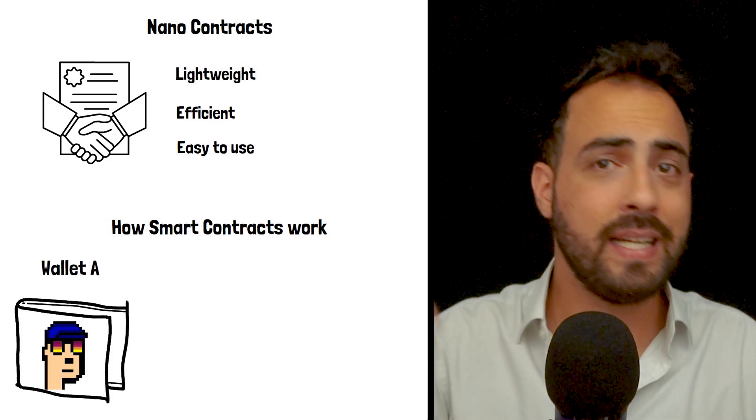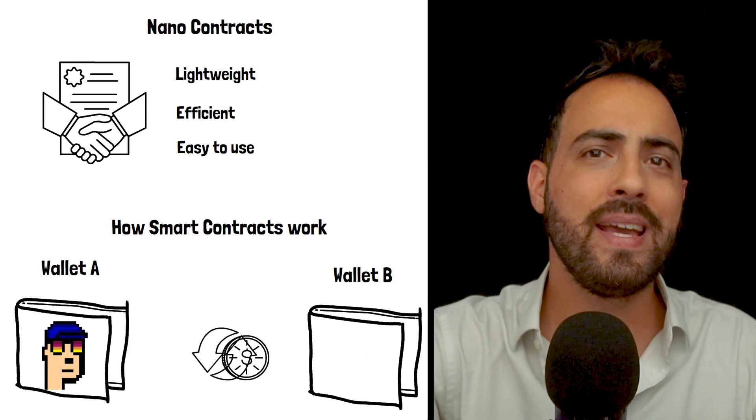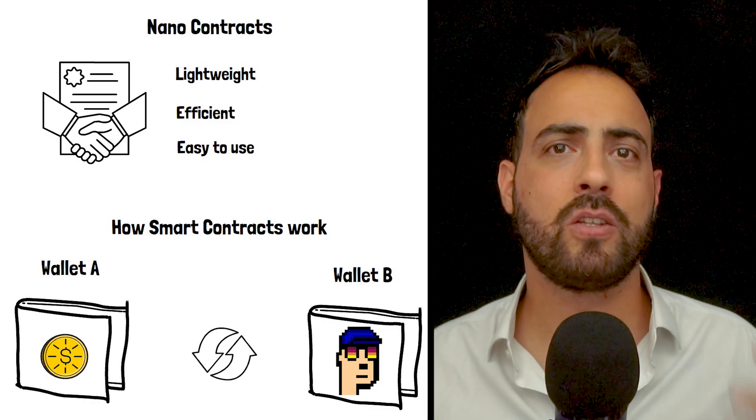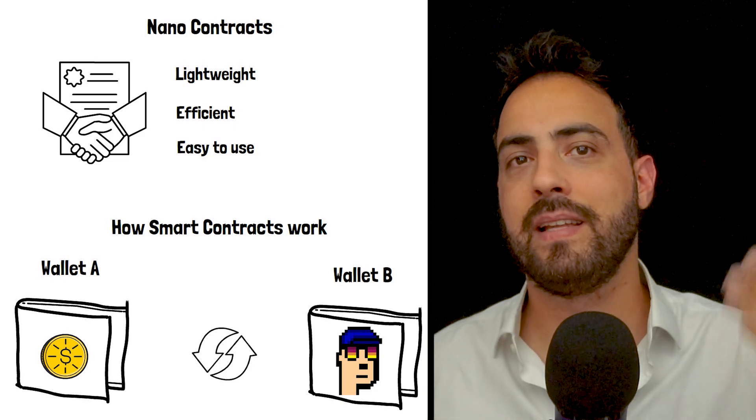A smart contract is simply a self-executing digital agreement on a blockchain that automatically executes when specific requirements are met. For example, send this NFT from wallet A to wallet B only when wallet B has successfully deposited X amount of funds to wallet A. Of course, smart contract use cases go beyond NFTs, such as token swaps, real estate, etc.